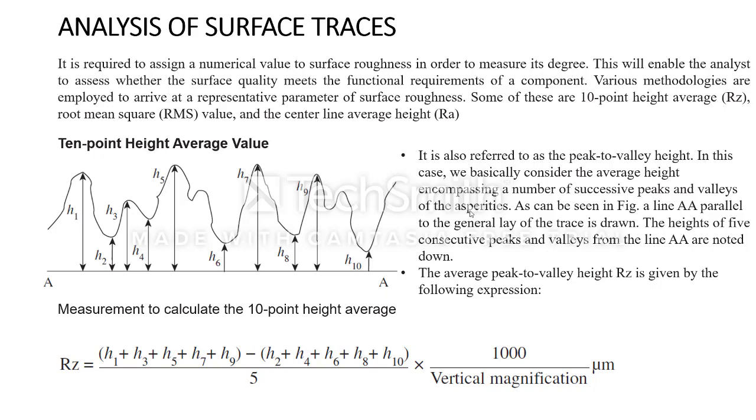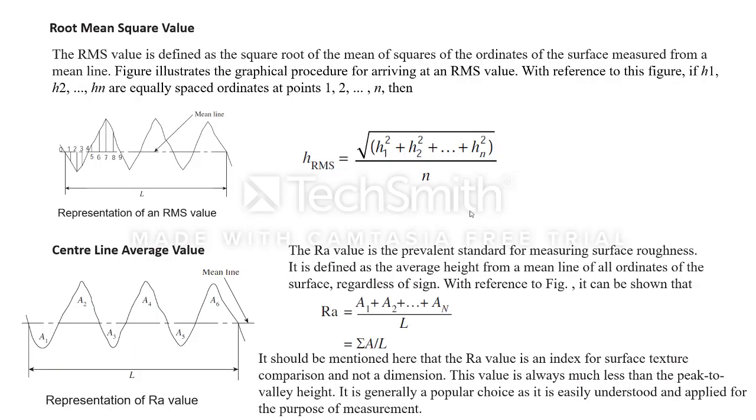For the measurement of roughness we have already discussed ten point height average value in the previous lecture. Now the second method is root mean square value. The RMS value is defined as the square root of the mean of squares of the ordinates of the surface measured from a mean line. One more thing we need to remember is all these values should be spaced equally, distributed uniformly over the roughness of the surface structure, and this ordinate is nothing but a Y value.